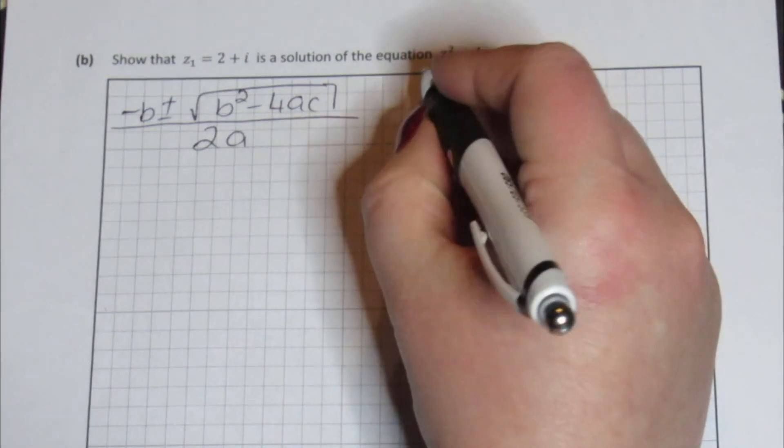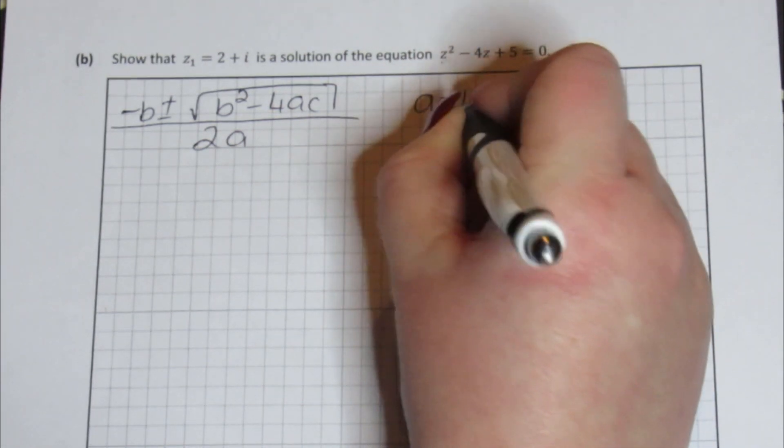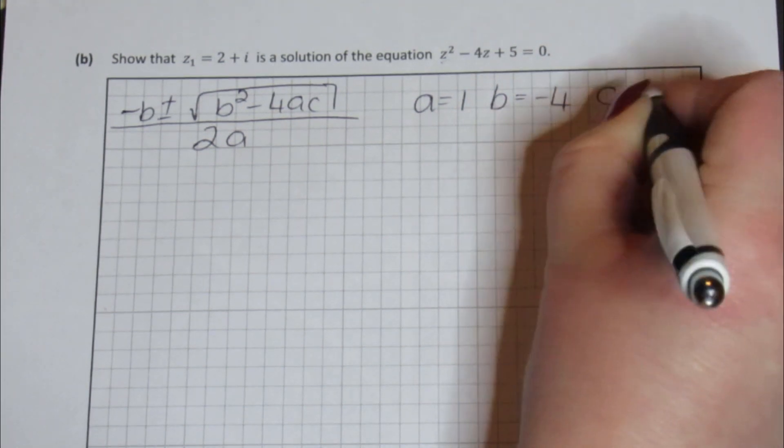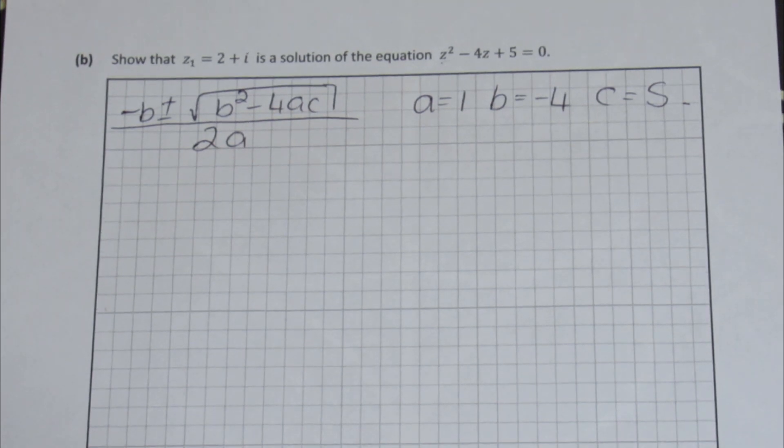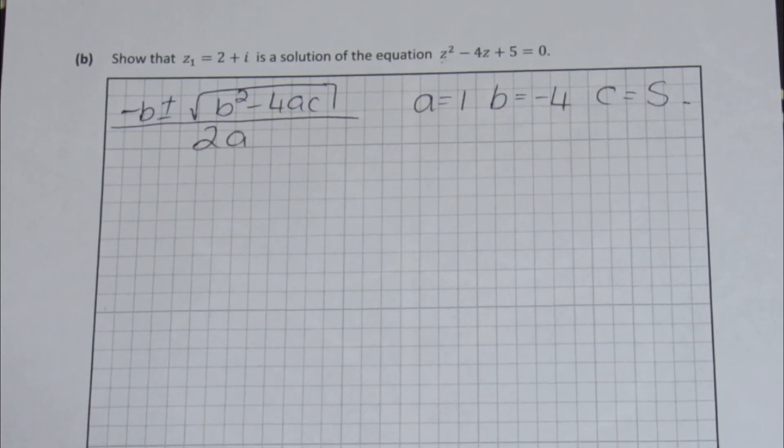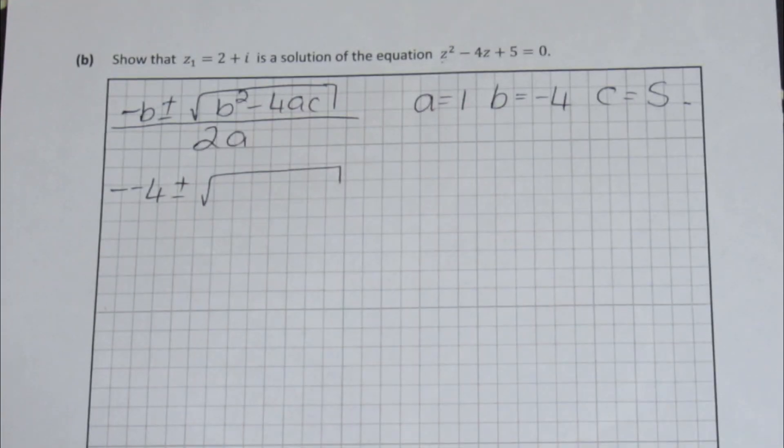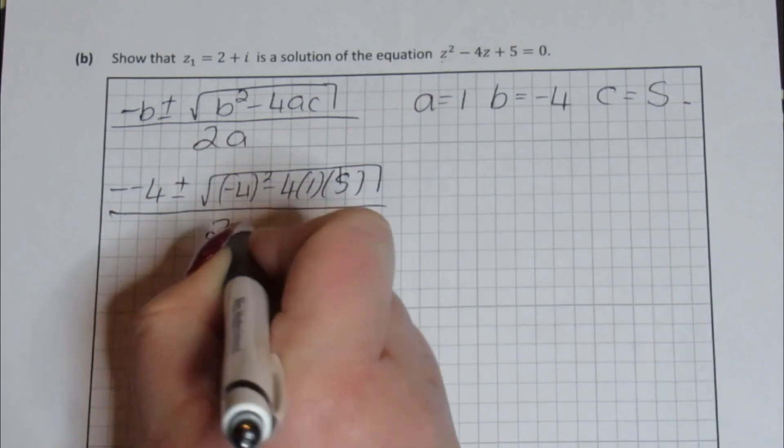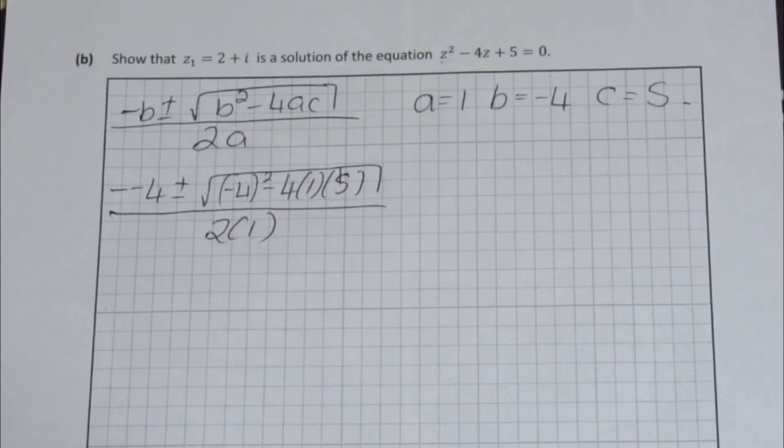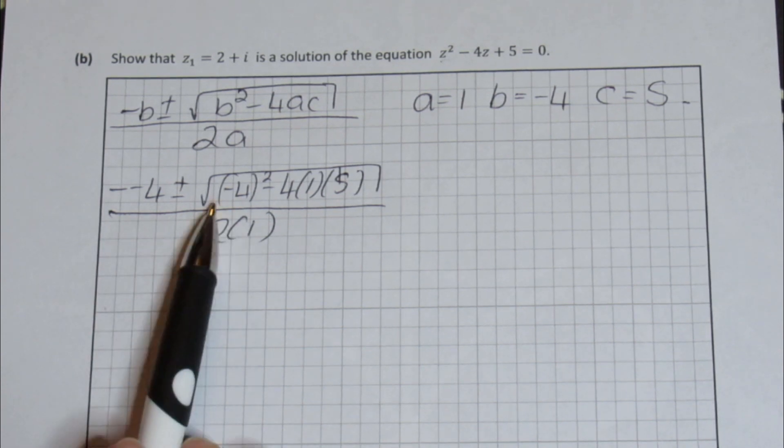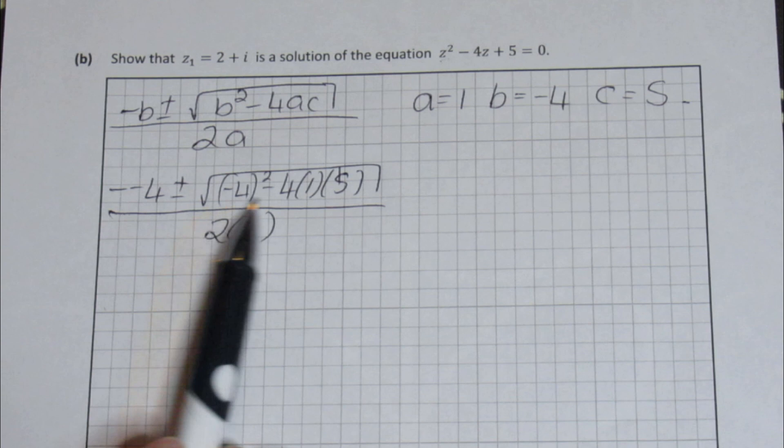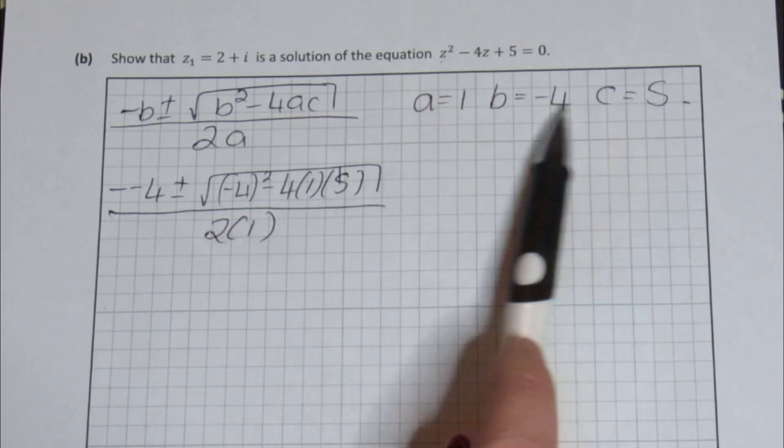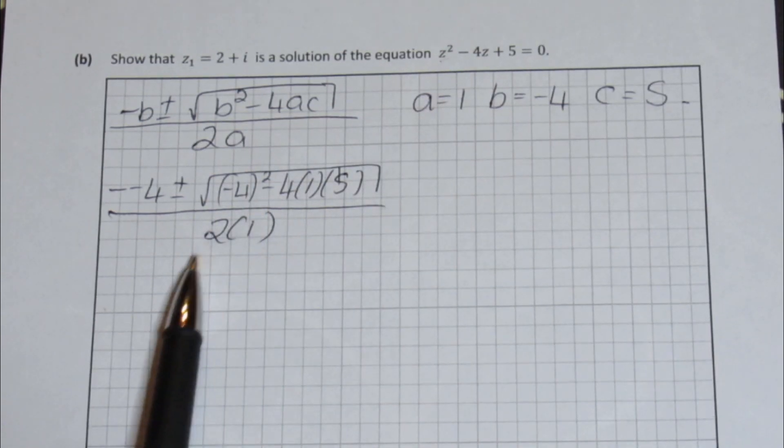You're going to take your normal minus b formula that you have used many a time. Minus b plus or minus b squared minus 4ac all over 2a. The a value is the number in front of the z squared which is 1. B is the number in front of the z which is minus 4 and c is our number at the end which is plus 5, and you're going to fill that in to your minus b formula. We get minus minus 4 plus or minus minus 4 squared minus 4 by 1 by 5 all over 2 by 1. Okay, so at this stage here from an examiner's point of view, you are quite a bit through the marks at this stage.